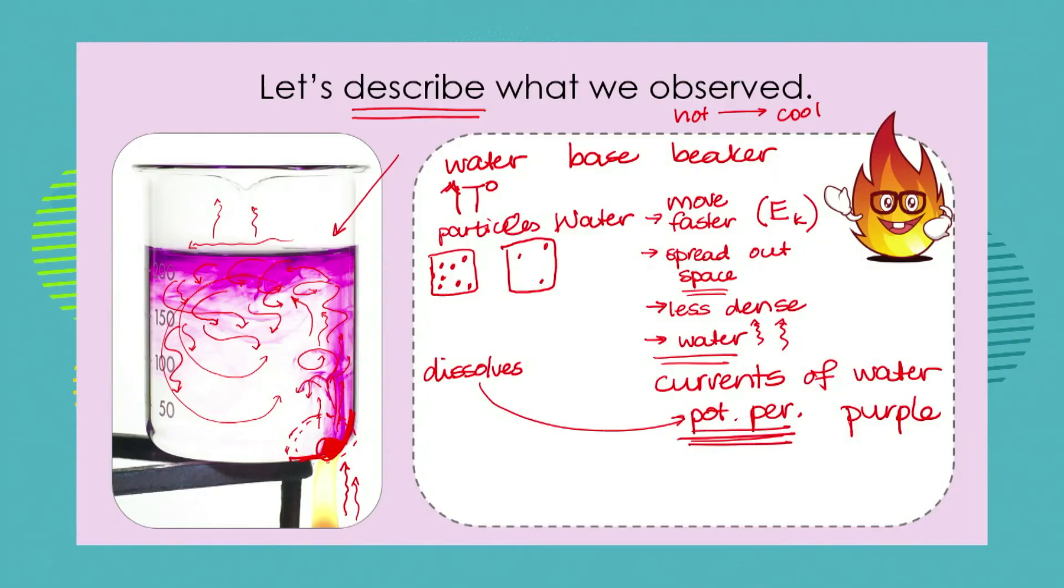So we can actually see the pattern of movements of the currents of water even though we certainly can't see the particles of water themselves. They're far too small and the water is transparent. So by adding this dye substance, you don't have to use potassium permanganate, you could try this using food colouring. It won't work as well as the potassium permanganate but you could try it and if you have a glass beaker or a glass container that can go on the stove you might be able to see this by placing a few crystals of food colouring into the water.